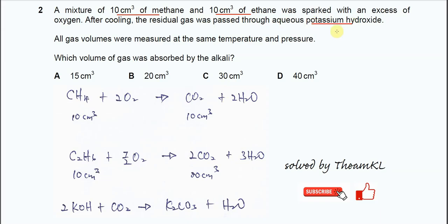We know that potassium hydroxide reacts with the CO2 that's produced. All gas volumes were measured at the same temperature and pressure. Which volume of gas was absorbed by the alkali?